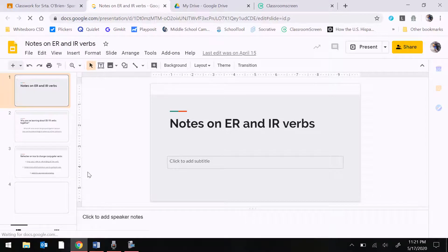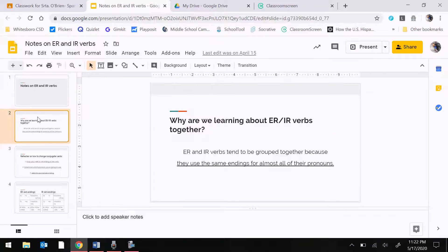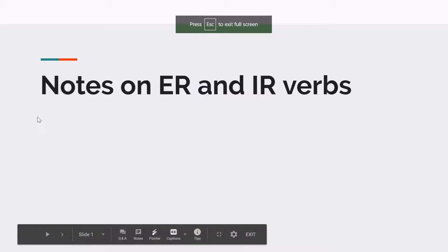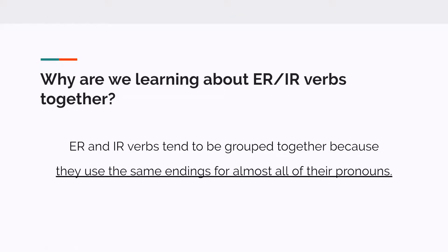I'm going to just read them again so we get a refresher on them. I'll make it full screen so we can see even better. Why are we learning about ER and IR verbs together? ER and IR verbs tend to be grouped together because they use the same endings for almost all of their pronouns.